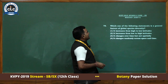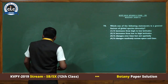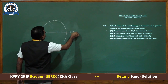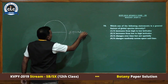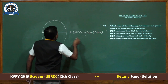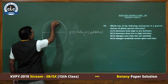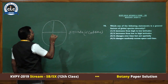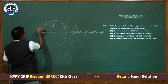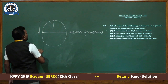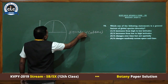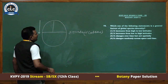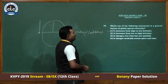Which one of the following statements is a general feature of global species diversity? According to global species diversity, if we go from the equator region (0 degree latitude) toward the poles, biodiversity will decrease due to decrease in temperature, rainfall, and humidity. Conversely, if we go from the poles to the equator — high latitude to low latitude — biodiversity will increase due to increase in temperature, rainfall, and humidity. So biodiversity is maximum nearer the equator. The answer is first: it increases from high to low latitudes.